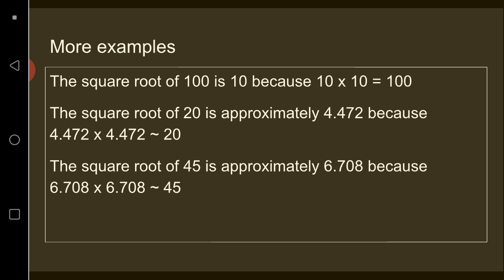Some more examples: the square root of 100 is 10 because 10 times 10 equals 100. The square root of 20 is approximately 4.472 because 4.472 times 4.472 equals approximately 20. And the square root of 45 is approximately 6.708 because 6.708 times 6.708 equals approximately 45.